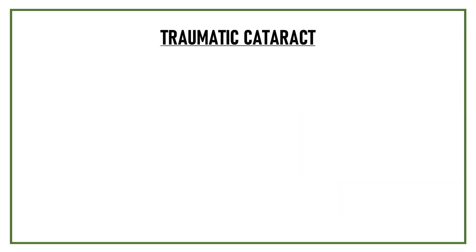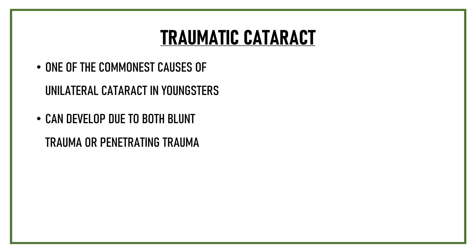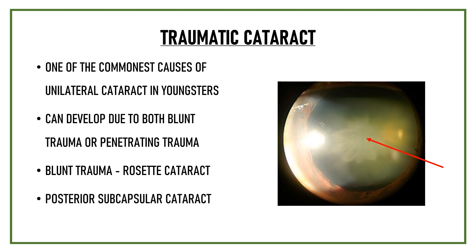Trauma is one of the commonest causes of unilateral cataract in youngsters. Traumatic cataract can develop due to both blunt trauma as well as penetrating trauma. The type of cataract typically seen in blunt trauma is known as rosette cataract, because its shape resembles the arrangement of rose petals. Another morphology commonly seen in trauma is a posterior subcapsular cataract.